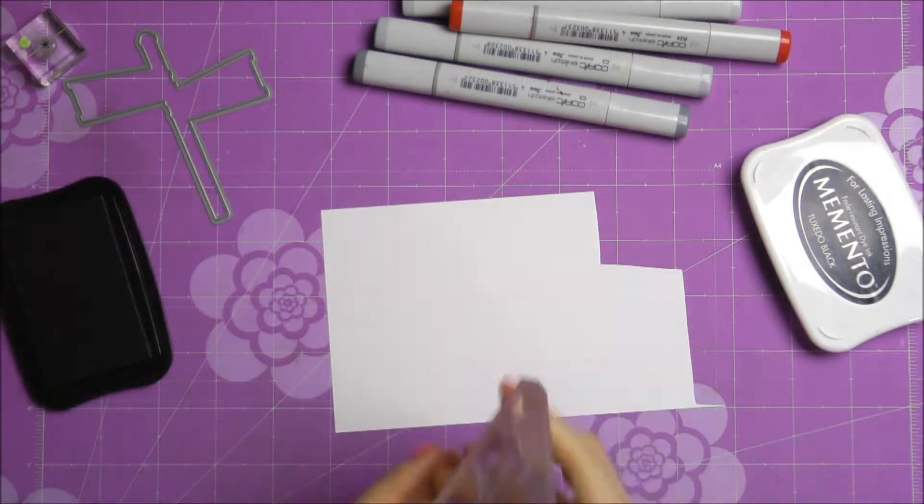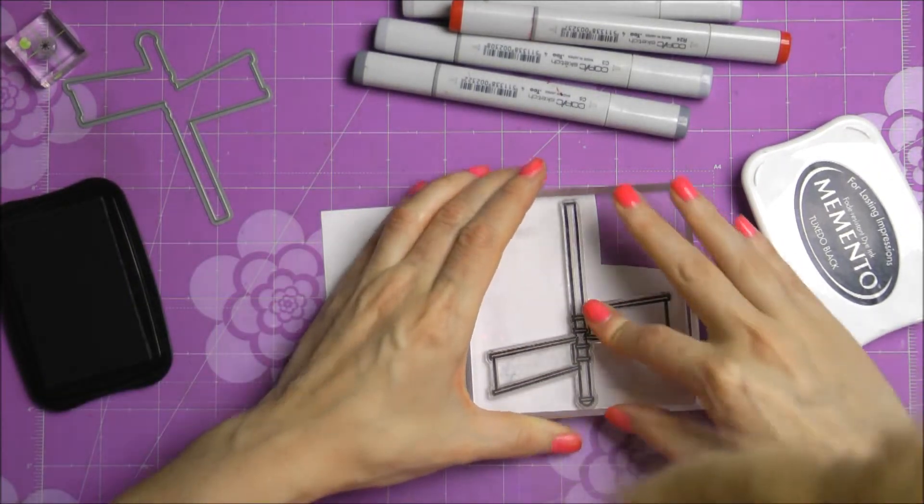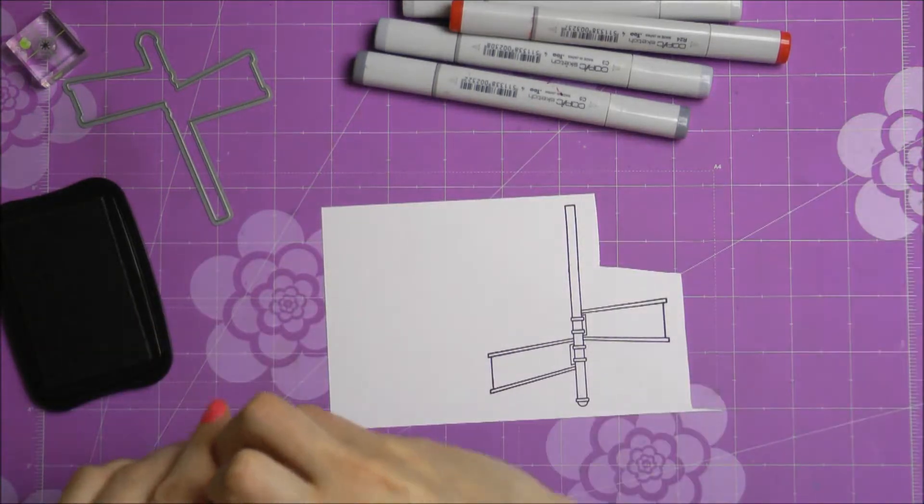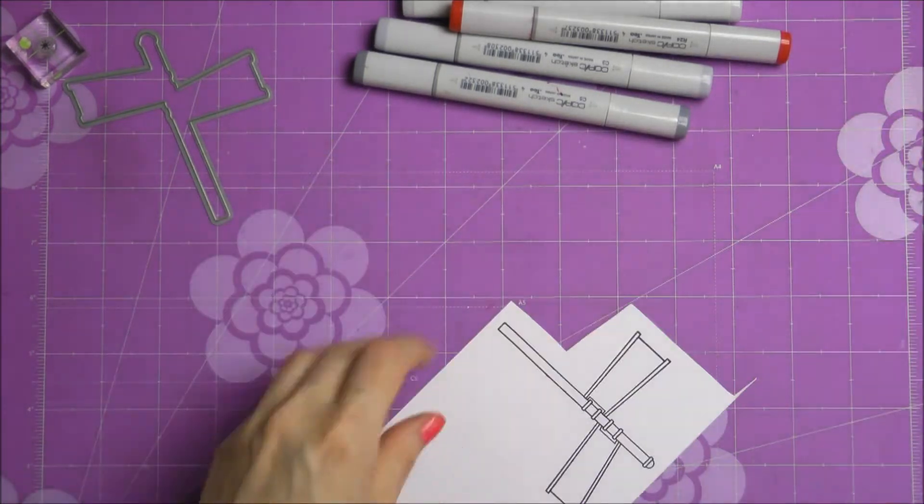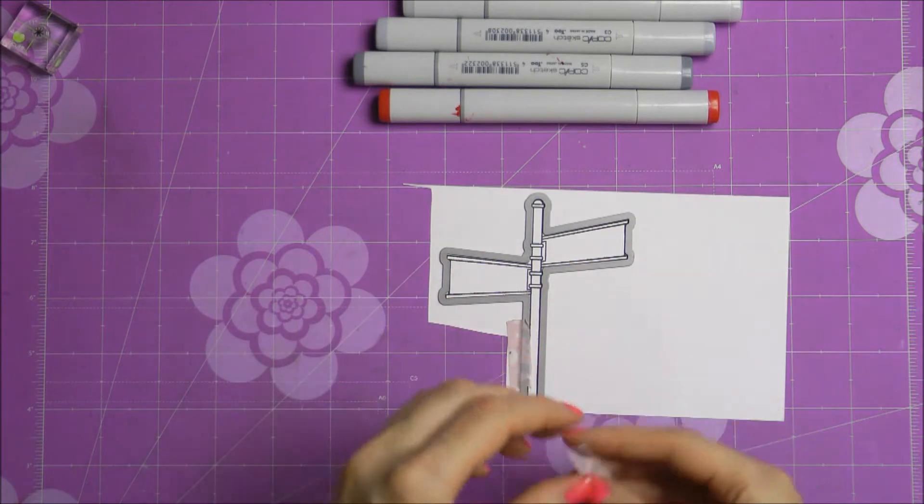So here I have that street sign stamp from Neat & Tangled and I'm inking it up using some black ink from Memento. Now I chose this particular ink because I wanted to color my image using some Copic markers. Now I'm also using a new die from Neat & Tangled.